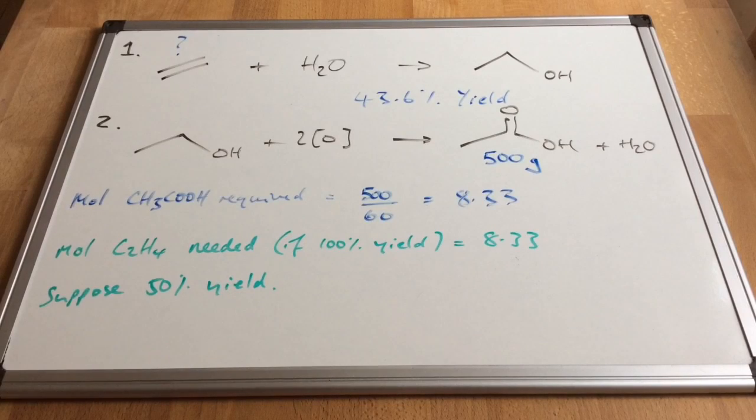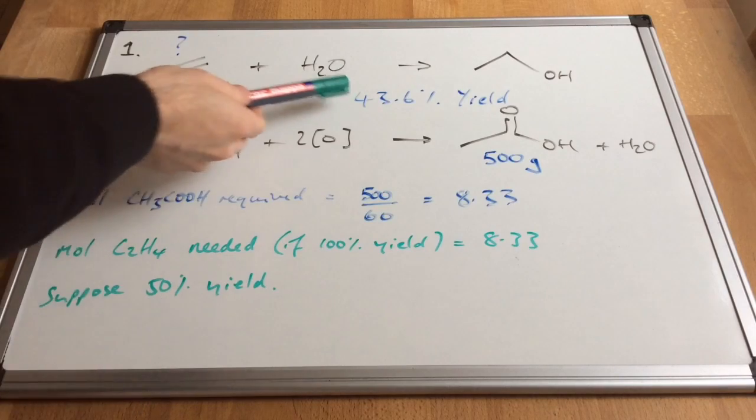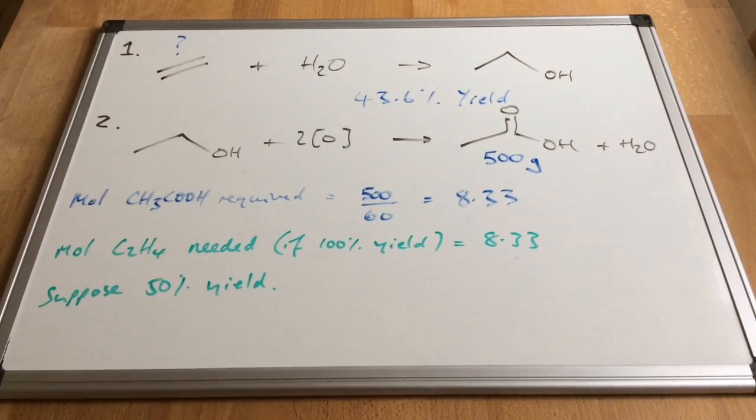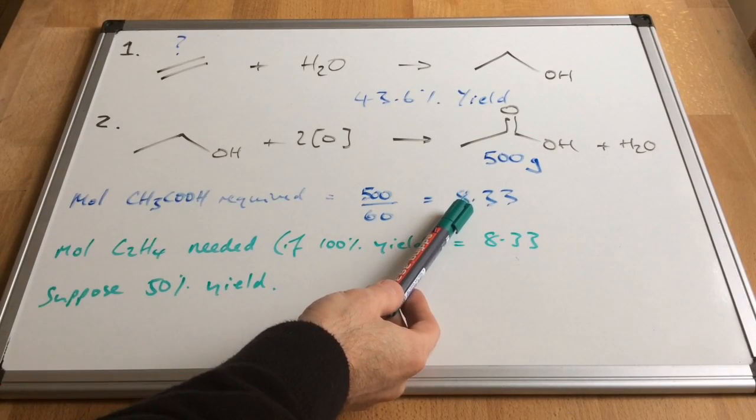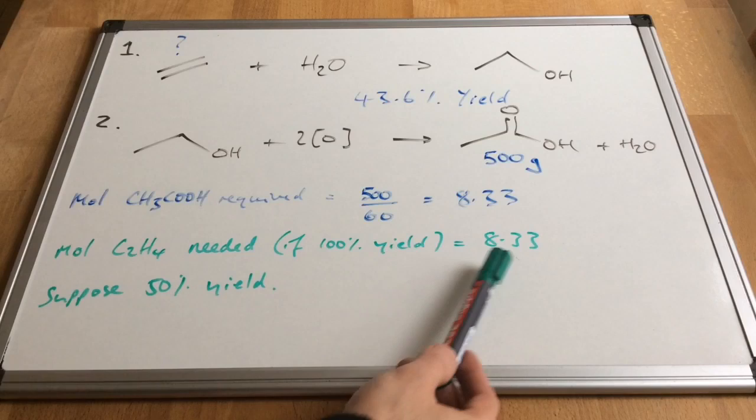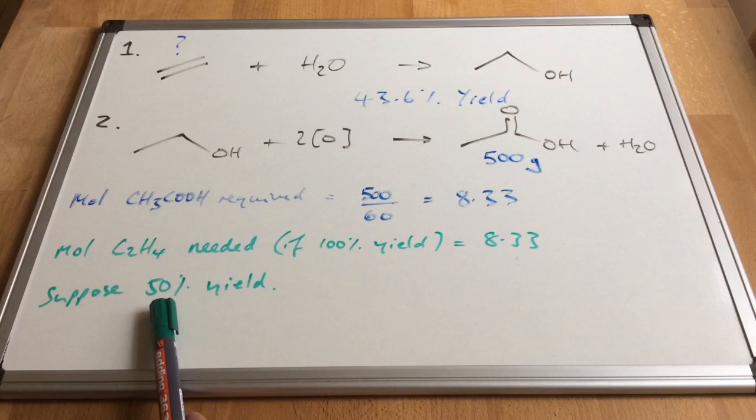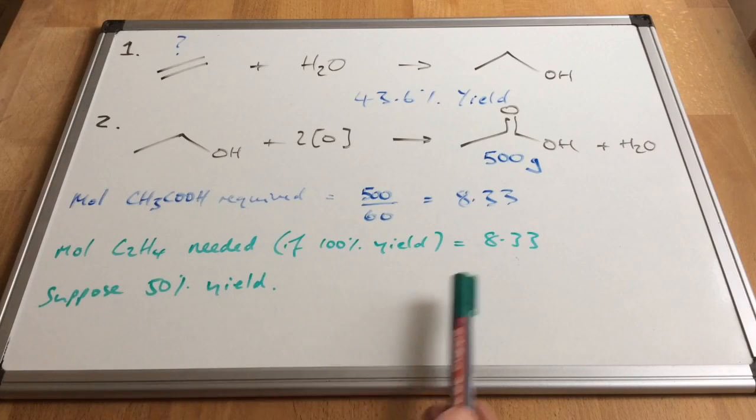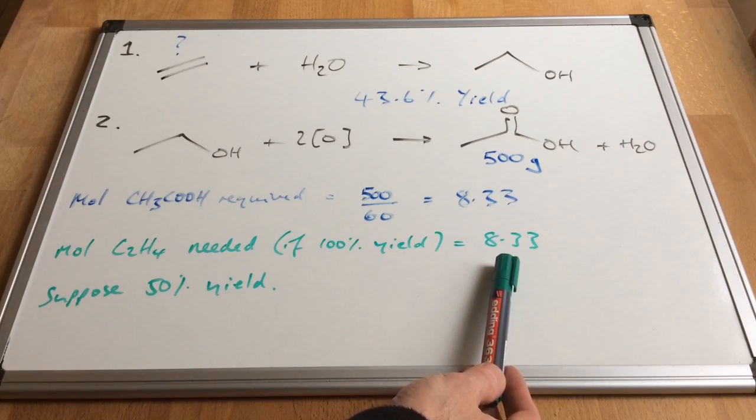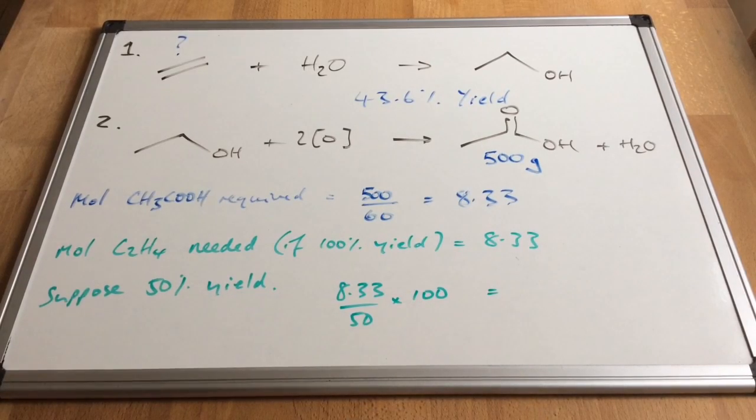Now before I factor in the actual yield of 43.6%, I just want to make the maths a bit more understandable for people. So let's suppose the yield was 50%. So not 43.6, but 50. So we now know that to create 8.33 moles of carboxylic acid with 100% yield, we'd need 8.33 moles of ethene. If it was a 50% yield, we would need double the moles of ethene. So where does that 2 come from, that doubling?